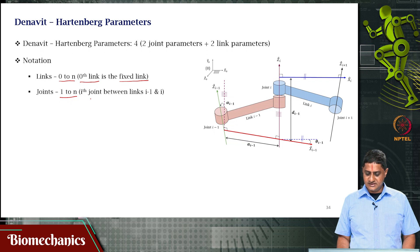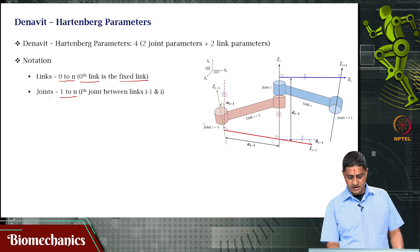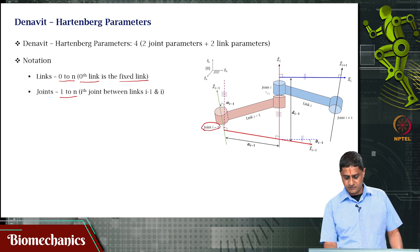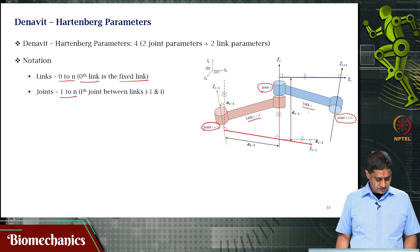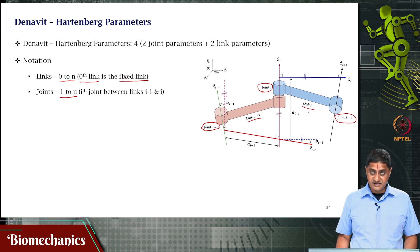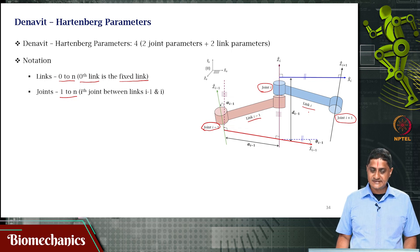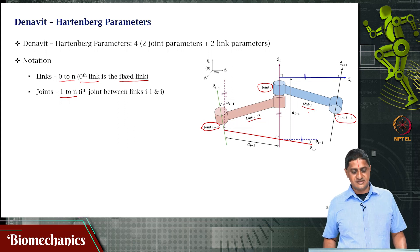Consider two links i−1 and i connected by joint i. The Z axis is always along the joint axis — the Z axis is always along the joint axis. The question is how to find the X axis and how to find the Y axis. The Z axis is relatively easy to define because it is the joint axis, but how do you find the X axis?